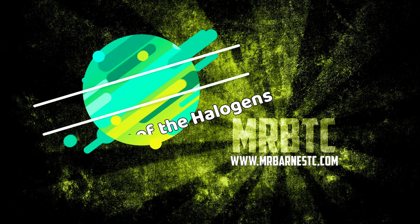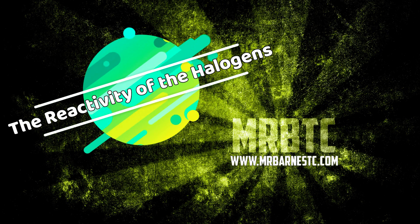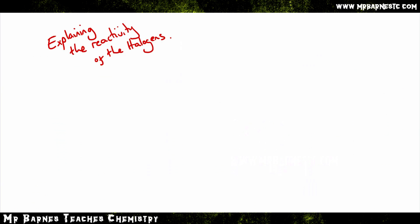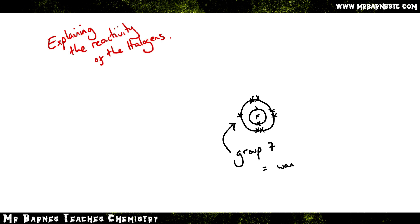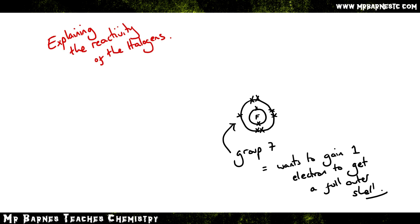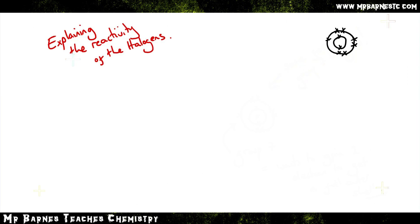Hi guys, welcome to this video which is going to explain what happens to reactivity as you go down group seven. If we start off looking at the electronic configuration, I'm going to use fluorine. As you can see here, fluorine has got seven electrons in the outer shell. It's in group seven, therefore it wants to gain one electron to get a full outer shell and to become part of a stable compound. This is the same for every single element in group seven — all the halogens want to gain one electron to get a full outer shell.